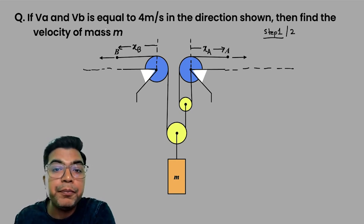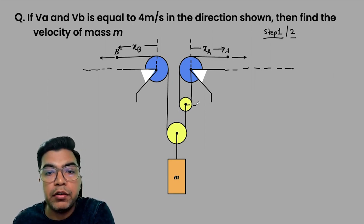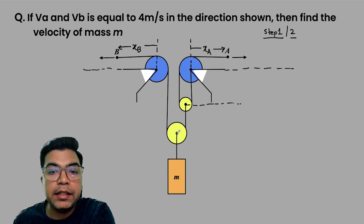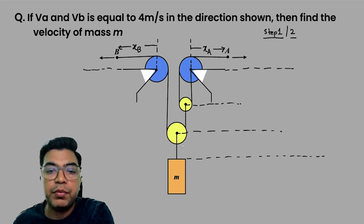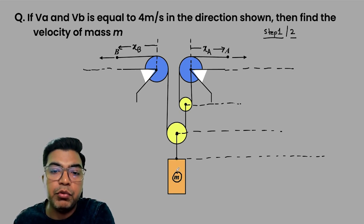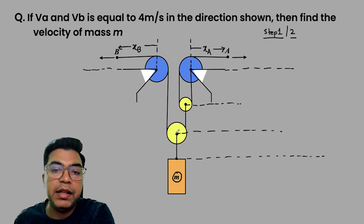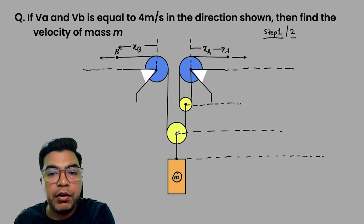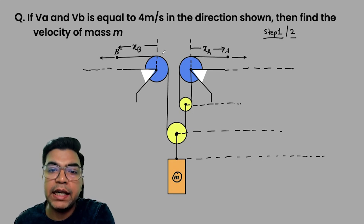Step two: mark or locate all the positions. For example, xA — I take the rightward direction as positive for A, and for B I take the leftward direction as positive. It is always important to take the direction in which the particle is moving. Now, this pulley is moving, so we'll locate it too. This mass is also moving, but its velocity equals the velocity of the center of this pulley because the length between them is constant.